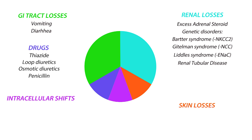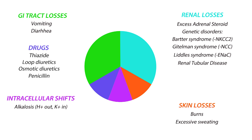Potassium can also be lost through the skin via burns or sweat as a result of strenuous exercise. Finally, increased cellular uptake can lead to decreased serum potassium, which can occur under metabolic alkalosis, where the cells secrete hydrogen ions in exchange for potassium ions, or excess catecholamine or insulin release, which promotes the cellular uptake of potassium.